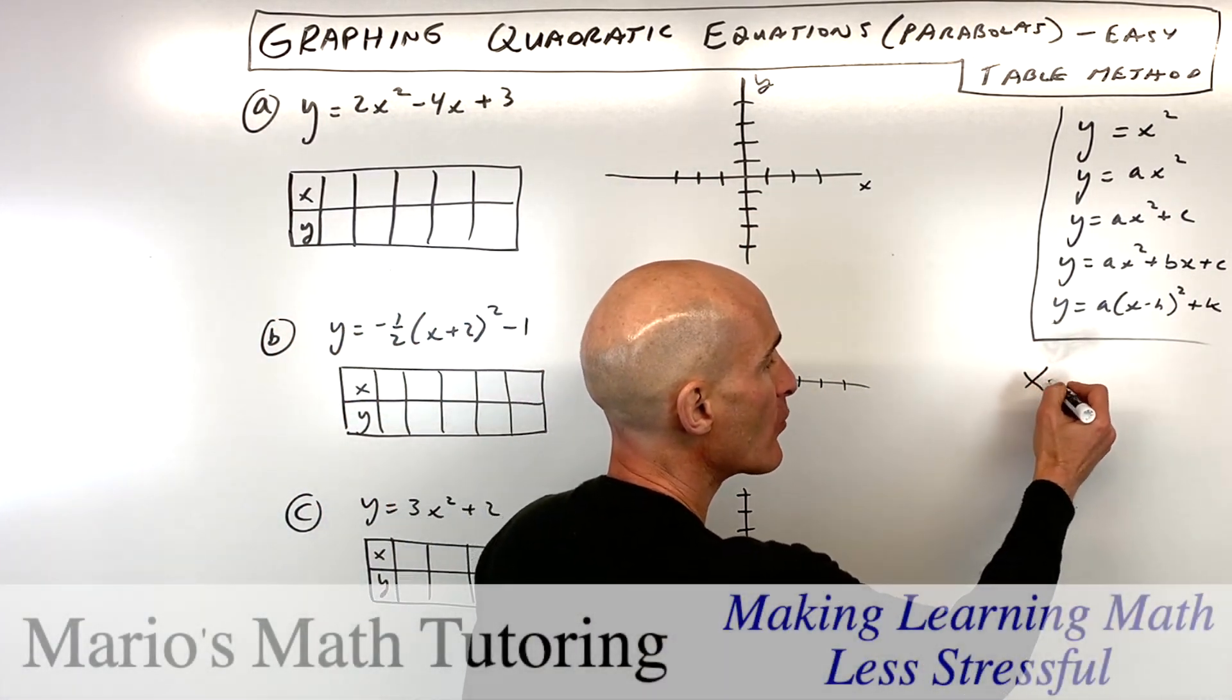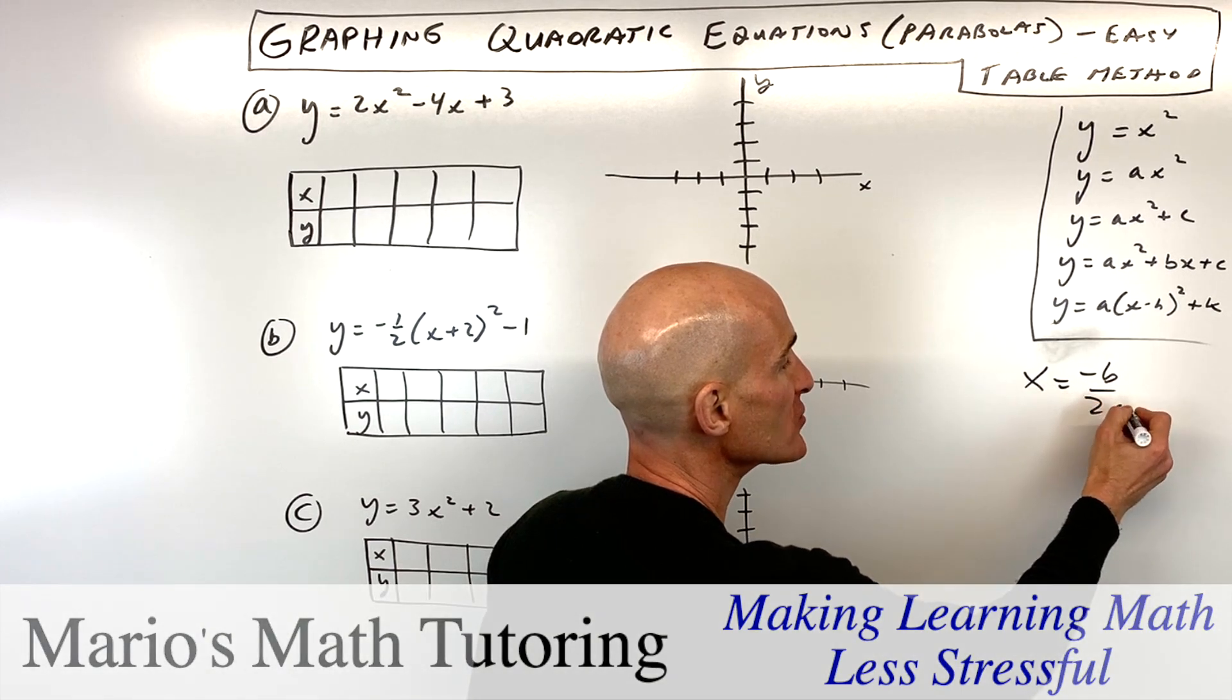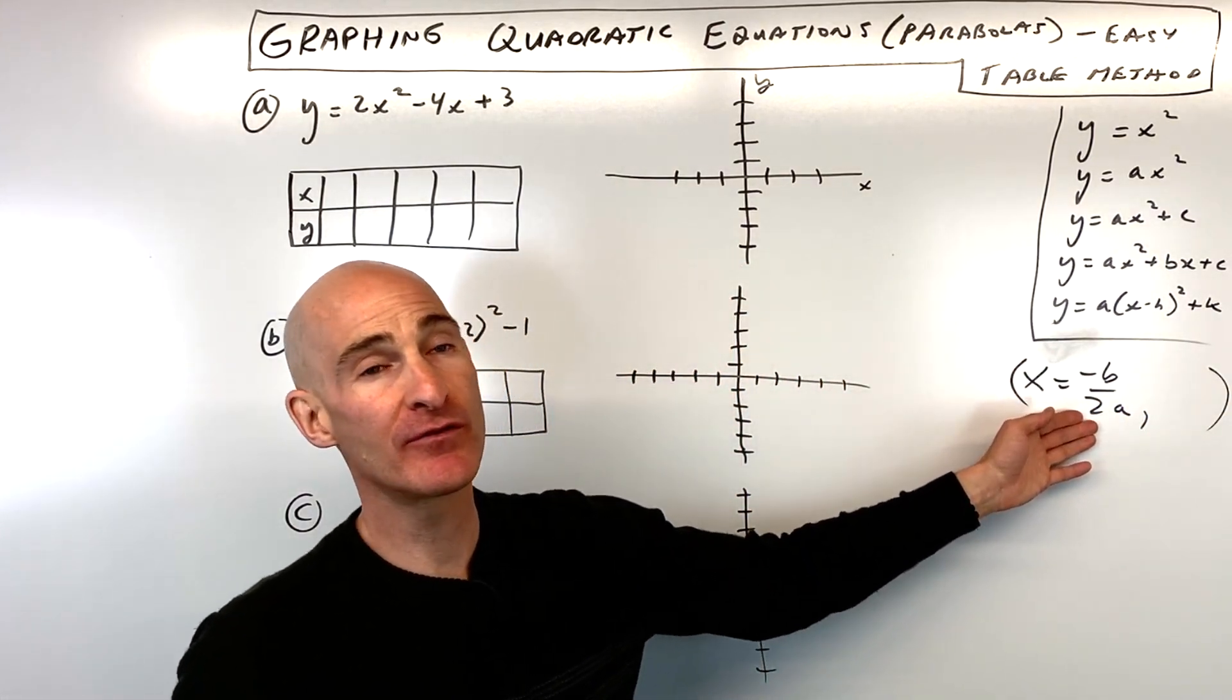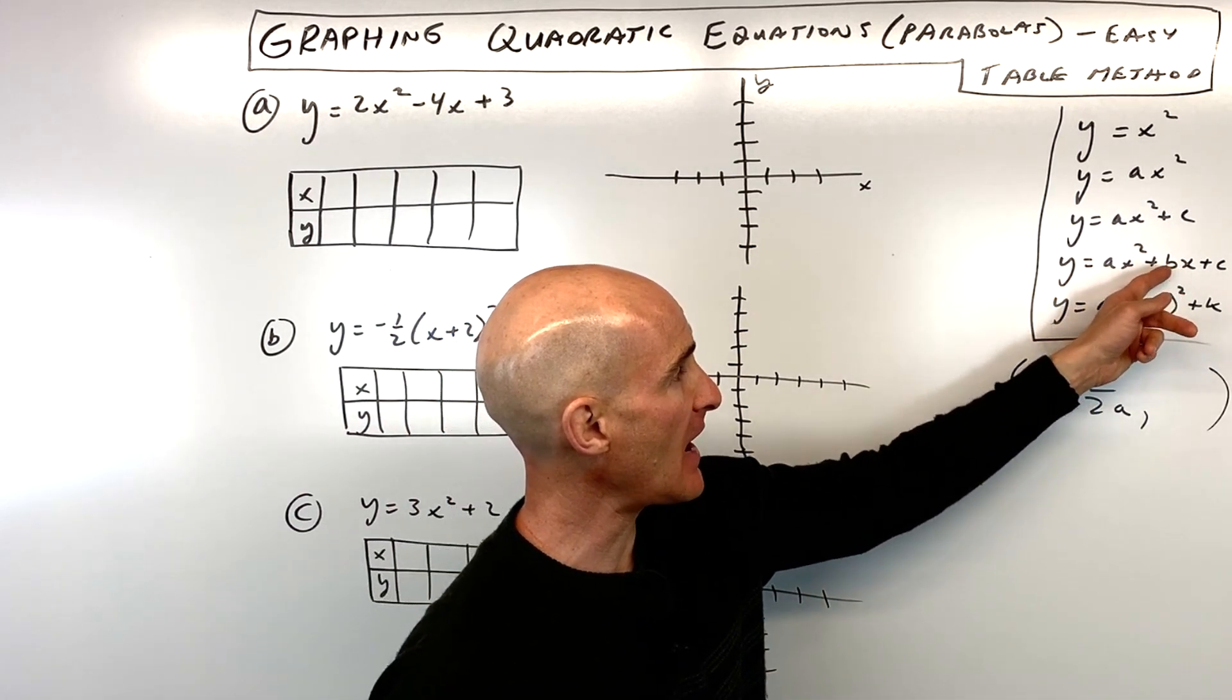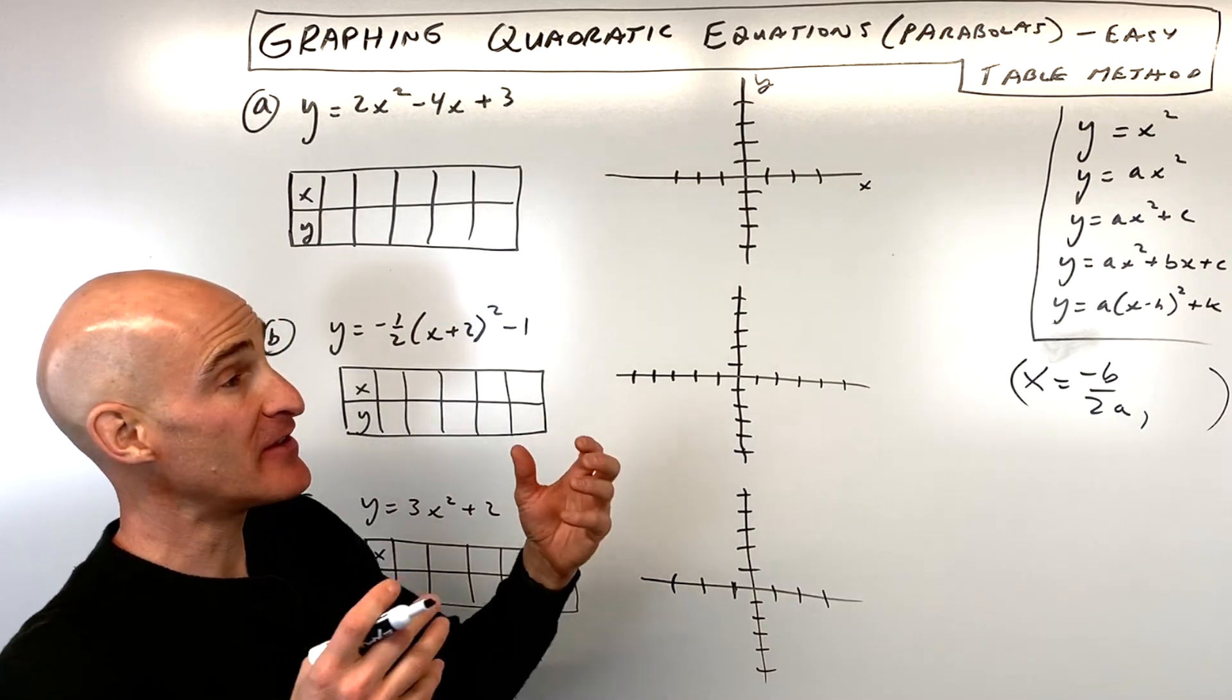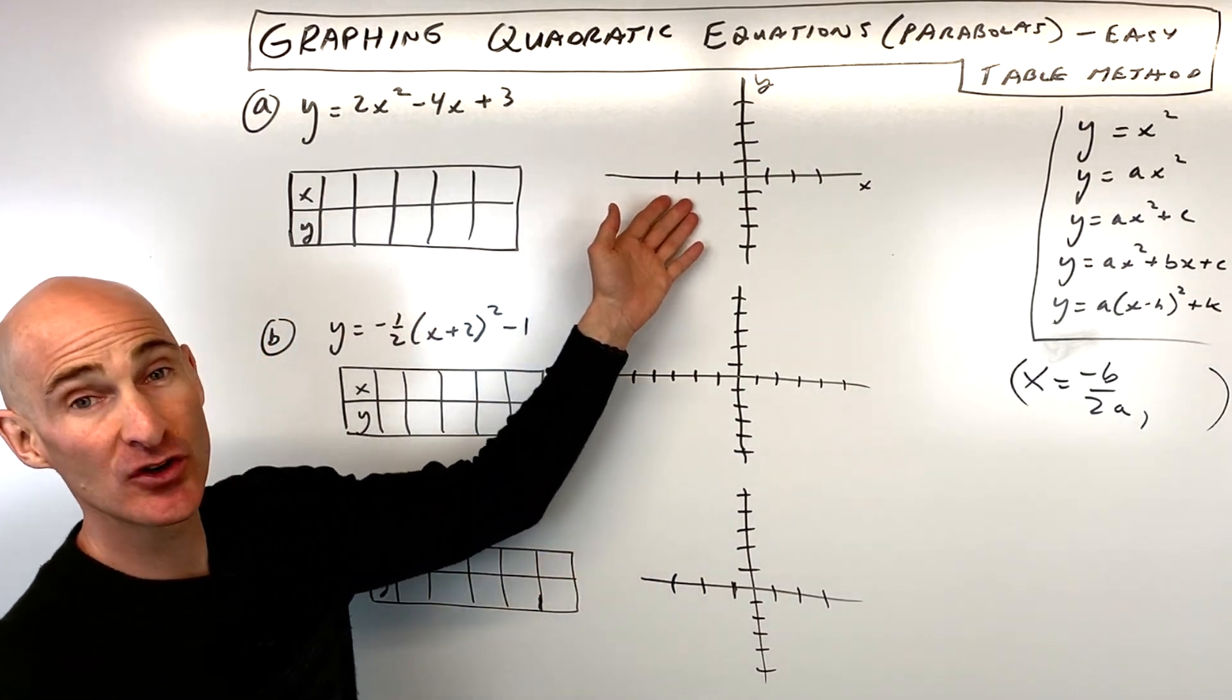And to find the vertex, you're going to want to memorize this formula: x equals negative b divided by 2a to find the x-coordinate of the vertex. You can then put that back in for x to find the y-coordinate. That's the toughest part about this problem, which is really not that tough, and then we're going to find the additional points to get a good graph.